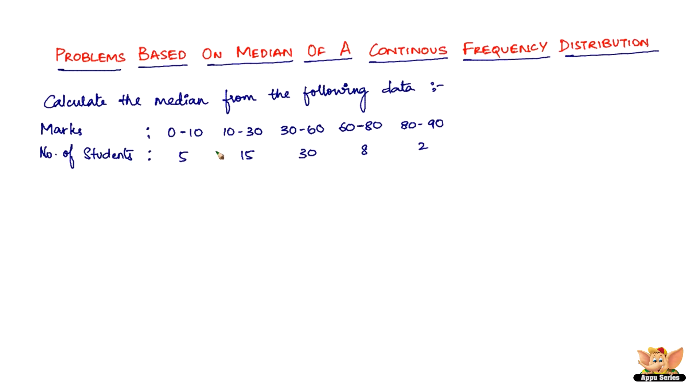So 0 to 10 has got 5 students, 10 to 30, 15 and so on. So what we have to do is from the given continuous frequency distribution we need to calculate the median.